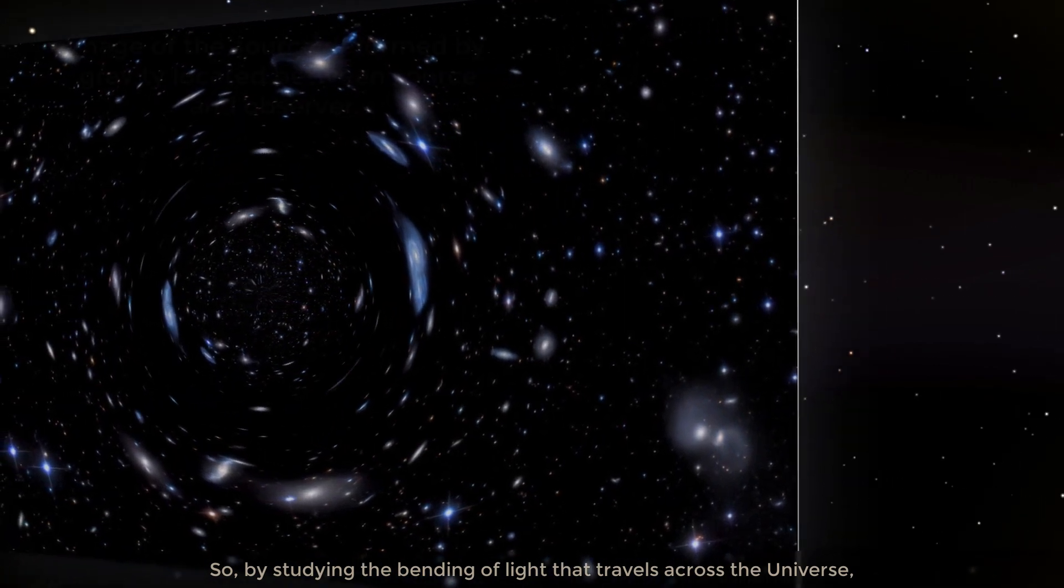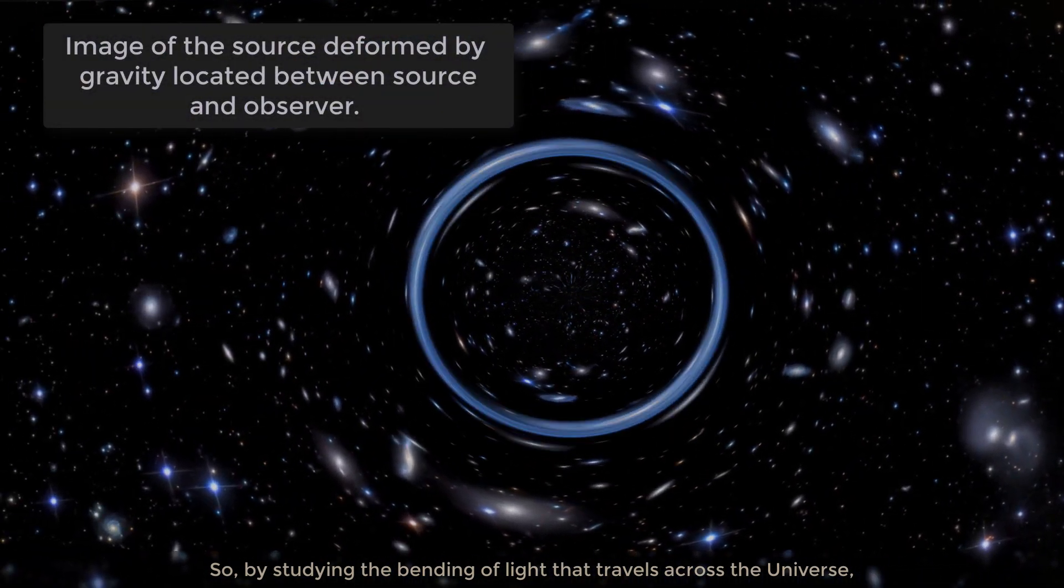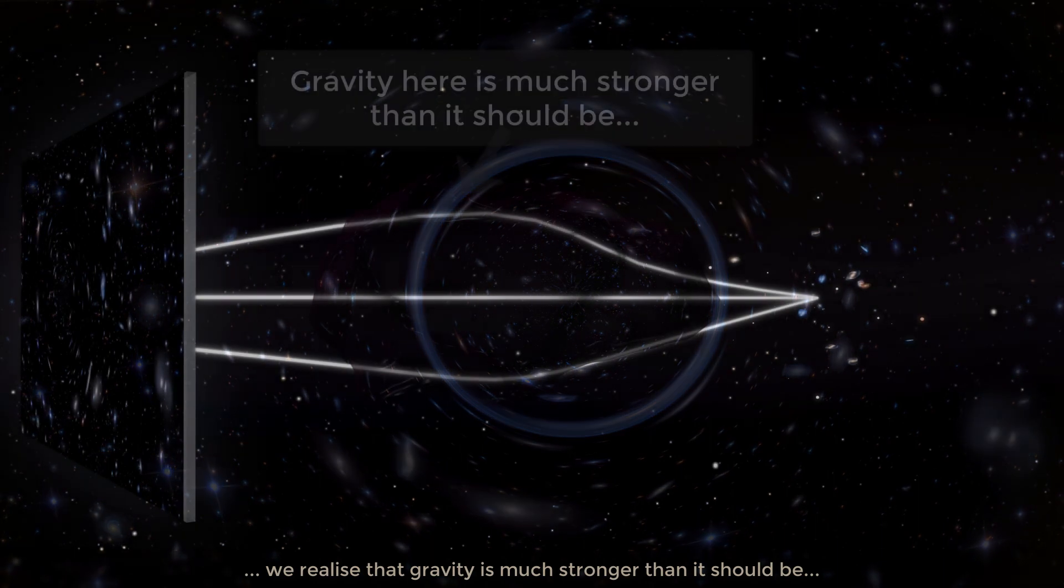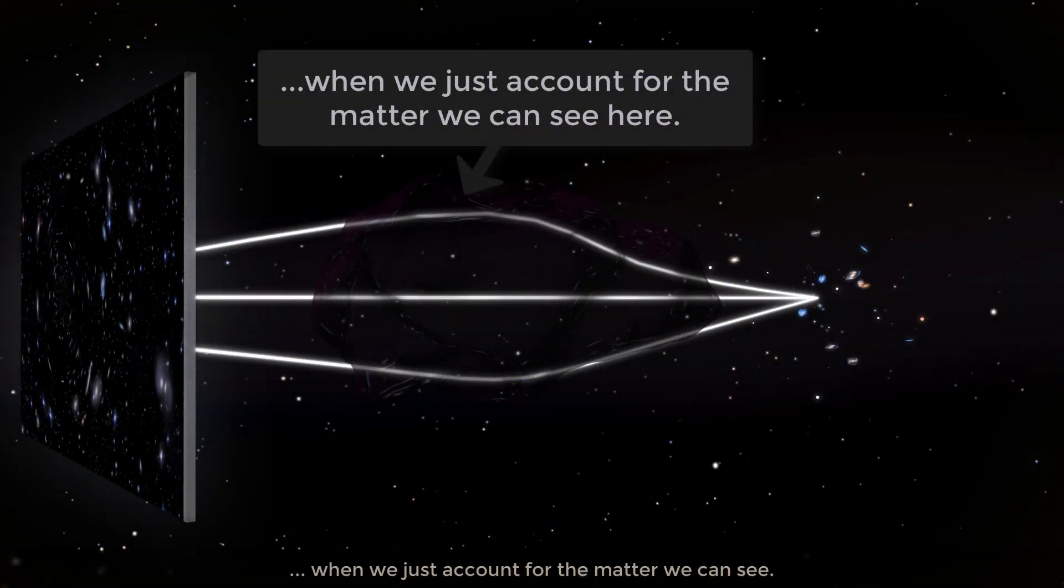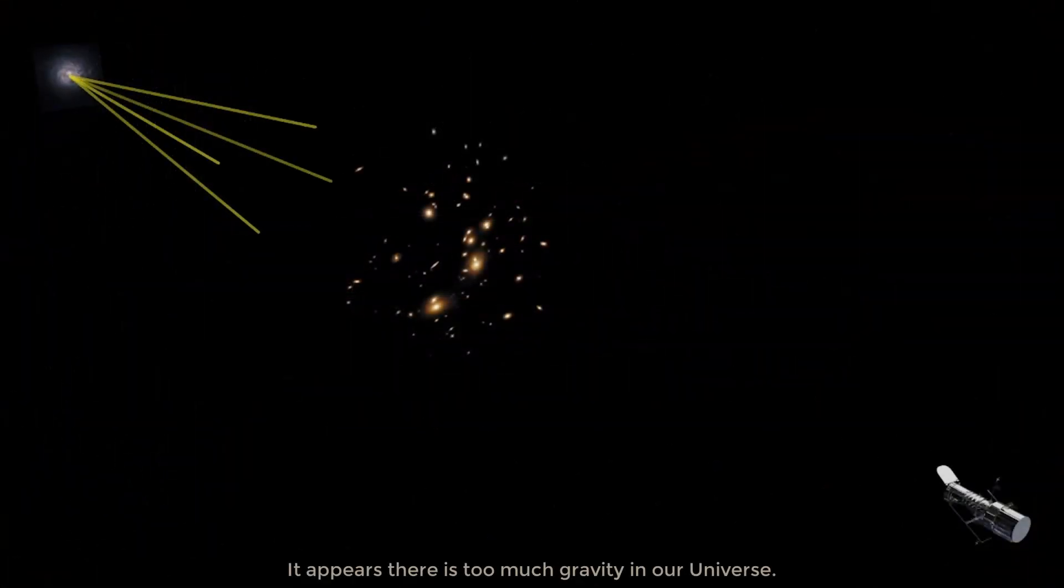So by studying the bending of light that travels across the universe, we realize that gravity is much stronger than it should be when we just account for the matter we can see. It appears there is too much gravity in our universe. What is going on?